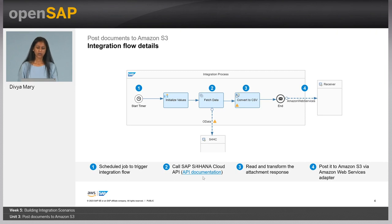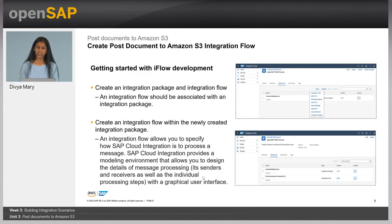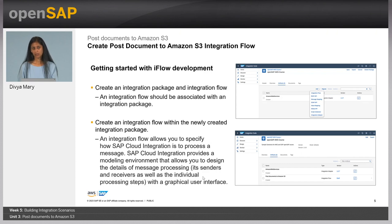So let's zoom into all of these individual parts before we jump into the demo. The first step is to create an integration package. An integration package allows you to group or bundle different integration services or scenarios that you want to build. An integration package can contain different types of integration steps — for example, it can contain an integration flow, the one that we'd be using in the demo today. It could be a REST API, a SOAP API, a message mapping that you can reuse across integration flows, or even an integration adapter.